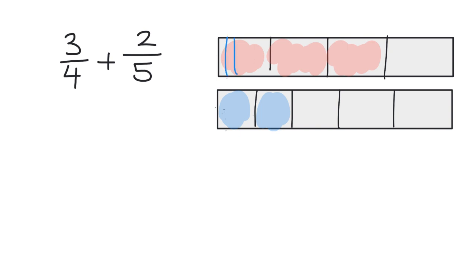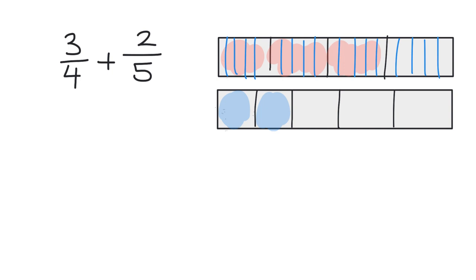So we cut each fourth into five pieces — one, two, three, four, five — repeated across all four fourths. There are our intervals for the three-fourths.